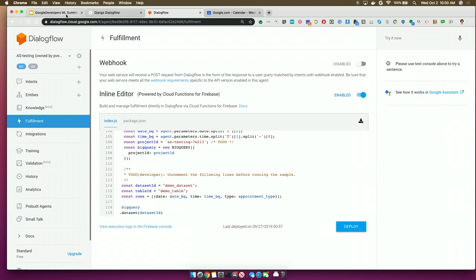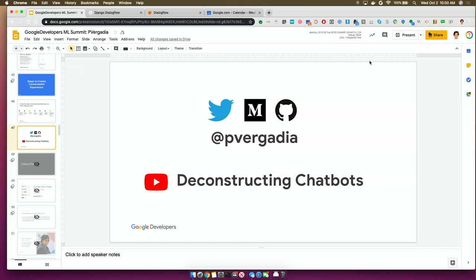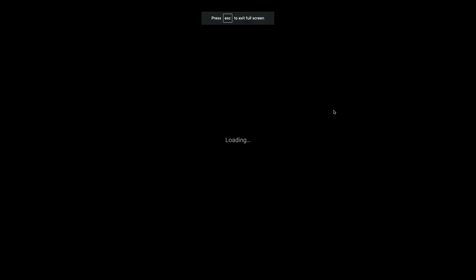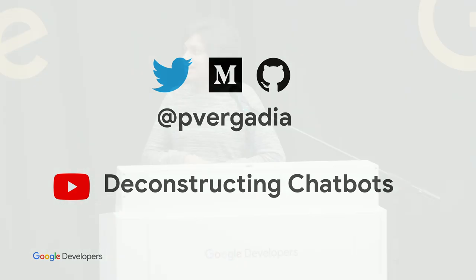All of this code is available on my GitHub repository. If you're new to Dialogflow or conversational experiences in general, I have a series called 'Deconstructing Chatbots' on the YouTube channel. It has about 15 episodes and this demo is also in there, so you can try it yourself — I have a step-by-step video to follow along as well. With that, I would wrap it up. Thank you. Hopefully this was helpful.